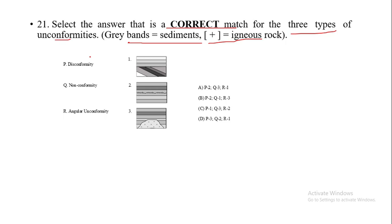We need to keep in mind the definitions of all three unconformities. Angular unconformity is the easiest to identify: it separates two types of strata — one that is inclined or highly dipping, overlain by a horizontal stratum. By this definition, we can identify the image showing highly dipping strata overlain by horizontal strata as angular unconformity.